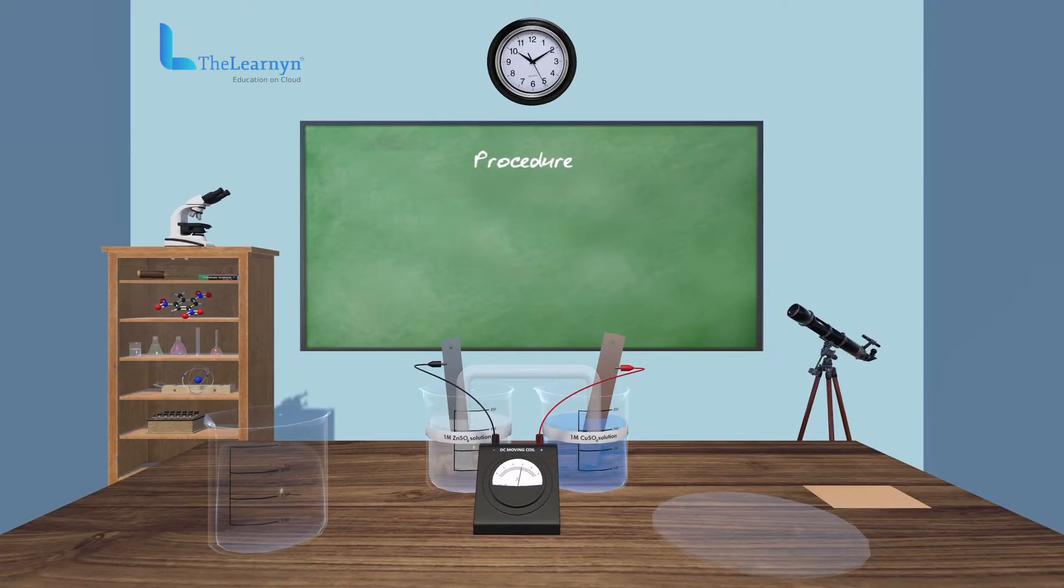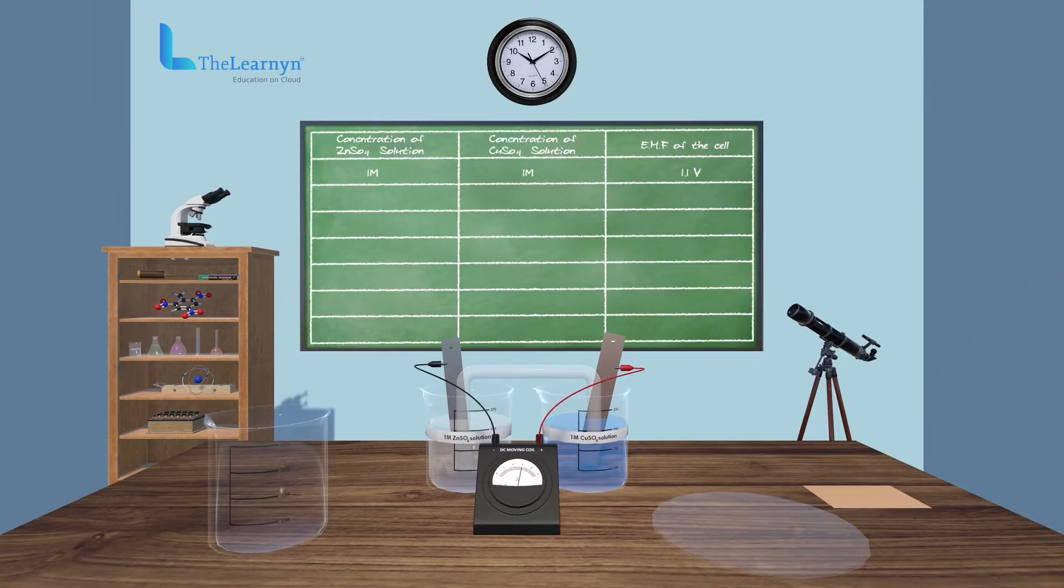Note the position of the pointer in the voltmeter and record the reading. This value gives the EMF of the cell.